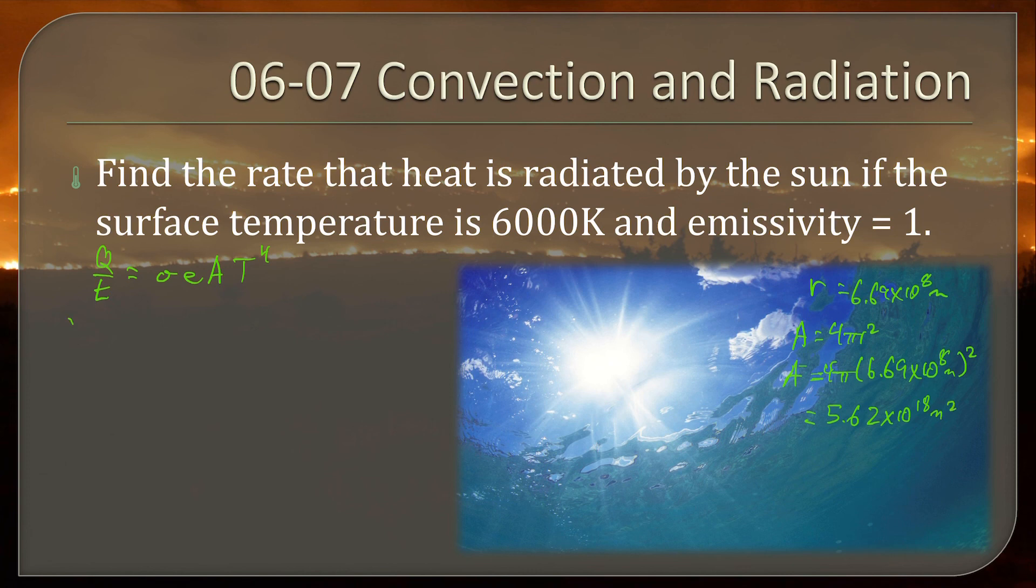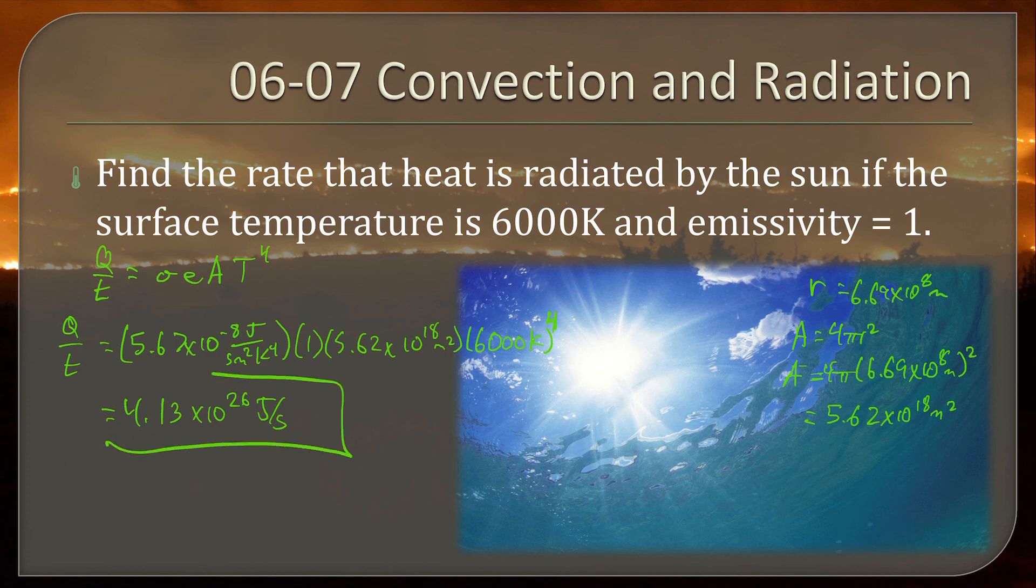So now we can fill in and find our rate of heat transfer. Sigma is the constant, the Stefan Boltzmann's constant, 5.67 times 10 to the negative eight. E is one. Our area is 5.62 times 10 to the 18. Now my calculator, I'm going to put more decimal places. And our temperature is 6,000 Kelvin and that's to the fourth. Run that all through the calculator and we should get about 4.13 times 10 to the 26 joules per second. That is a huge amount of heat every second.